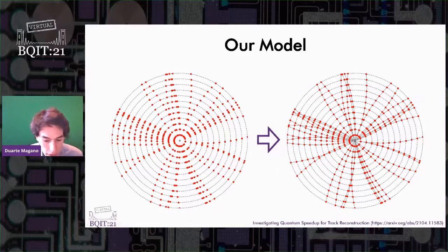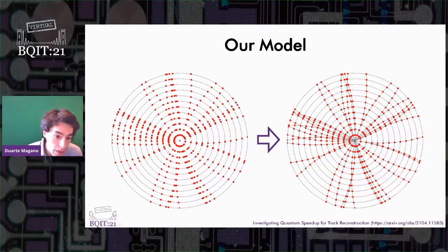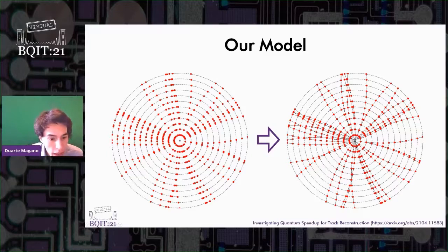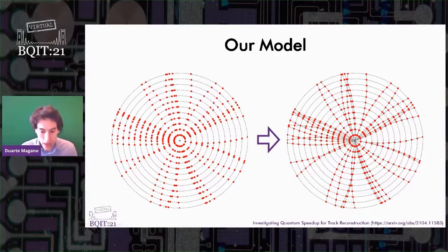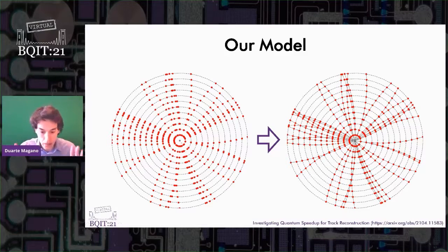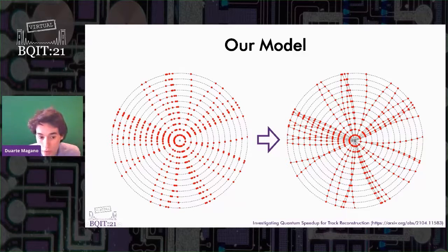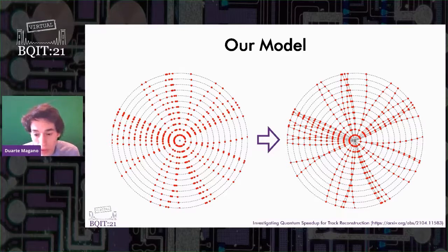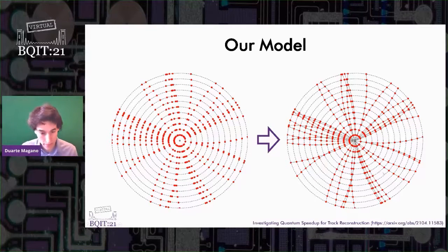Here is a sketch of our model. We think of a detector as a cylindrical shape with concentric layers — the gray dotted lines in this picture are the detector layers and the red dots are the hits. We assume that each produced particle traverses every layer exactly once. The input to our problem is a set of hits distributed along the various layers, assumed to be simply three-dimensional points, and the task is to group the hits into the correct tracks.